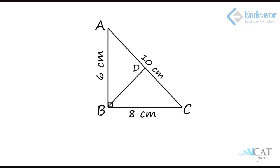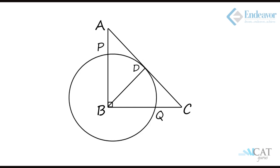Let us look at another interesting example based on the concept of right angle triangles and circles. We have a triangle ABC where the sides are 6, 8, and 10 centimeters. Though it is not mentioned, by Pythagoras' theorem we can conclude it is a right angle triangle with 90 degrees at angle B. We drop a perpendicular from B on AC and label that point D. A circle with radius BD is drawn cutting sides AB and CB at points P and Q respectively, and we must find the ratio AP to CQ.